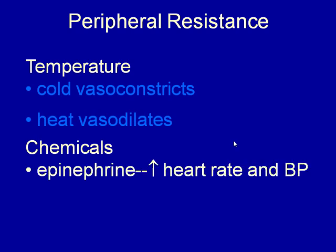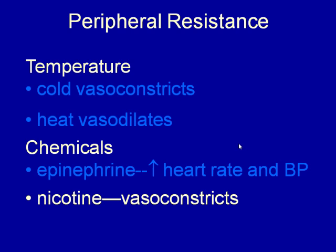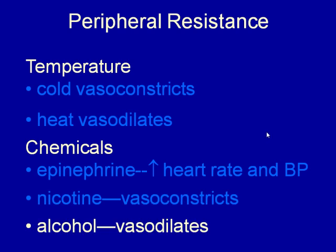Chemicals also affect peripheral resistance. Epinephrine vasoconstricts, increasing heart rate and blood pressure. Nicotine vasoconstricts — smokers are more susceptible to heart attacks because even a tiny circulating clot that would otherwise pass through wide vessels can cause blockage in vasoconstricted vessels. Alcohol is a vasodilator, which is why intoxicated individuals can succumb to hypothermia even in moderately cool temperatures — vasodilation causes heat to dissipate more rapidly from the body.